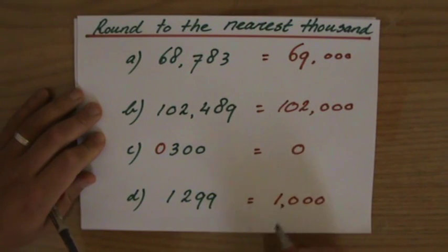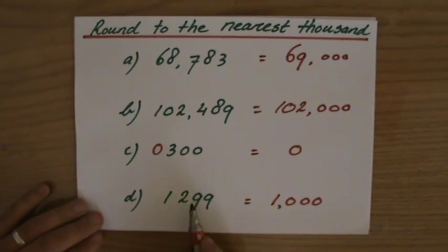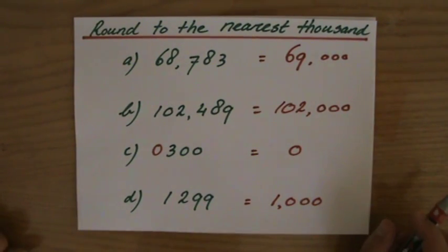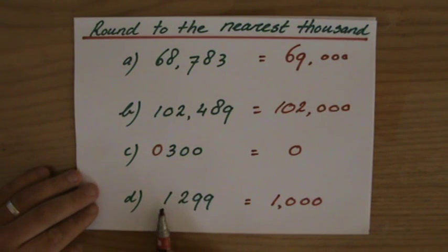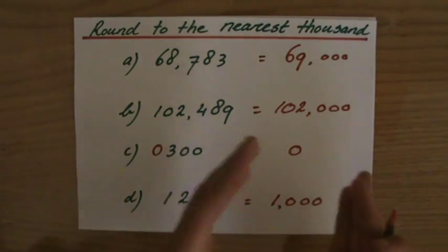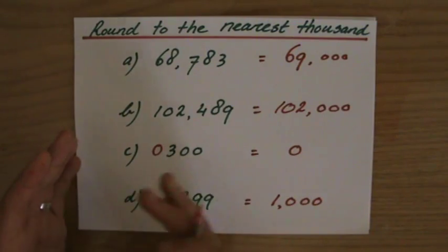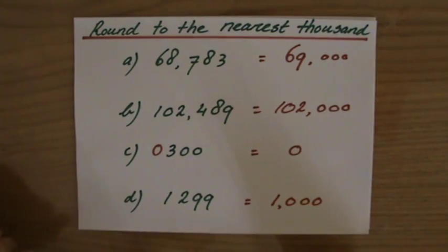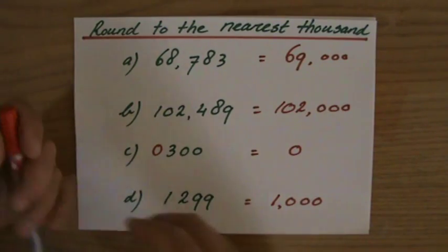So the answer is 1,000. Do not get confused because of all those big nines over there. It only depends on the next number which is a two in this case. Because 1,299 on a number line is just nearer to 1,000 than it is to 2,000. I hope this was useful and I'll see you soon in one of my other videos.